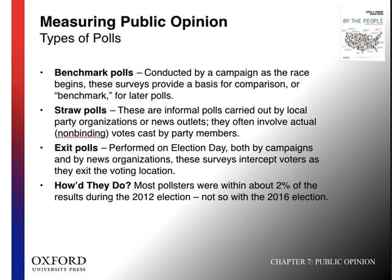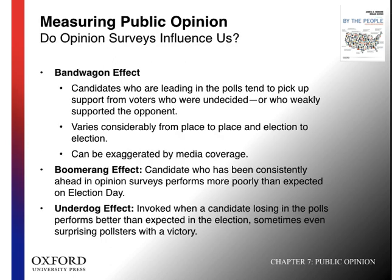There are different types of polls. A push poll is negative campaigning. Benchmark polls are taken at the very beginning of a campaign so a candidate can track how their popularity changes over time as the election approaches. Straw polls are quite informal, usually carried out by party organizations or news outlets, and are not very reliable. Exit polls are also not very reliable — done on election day by news stations or campaigns wanting results faster than official counts, by approaching voters outside polling places and asking who they voted for.